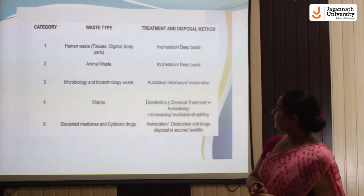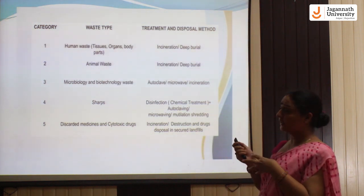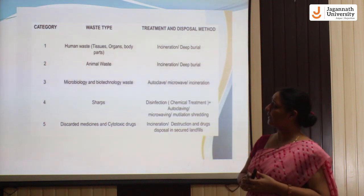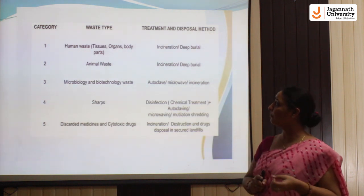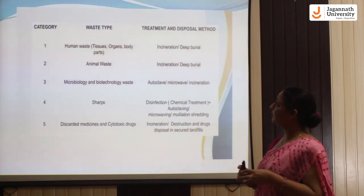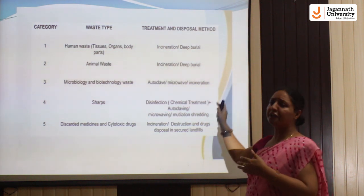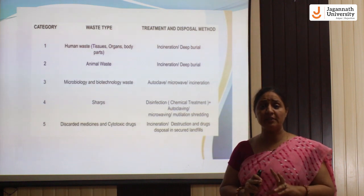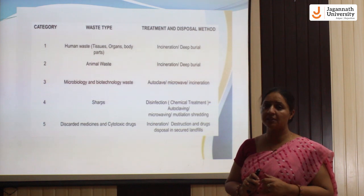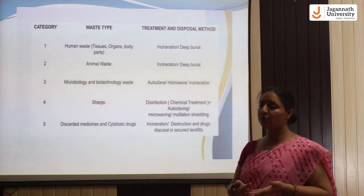This table shows which type of waste is generated from which source and how we can treat or dispose of it. In the first category, human waste like organs, body parts, and tissues must be incinerated or given deep burial treatment. Biomedical waste cannot be disposed of directly without treatment because it is highly hazardous and contaminated. Deep burial means underground landfilling as per the required depth.